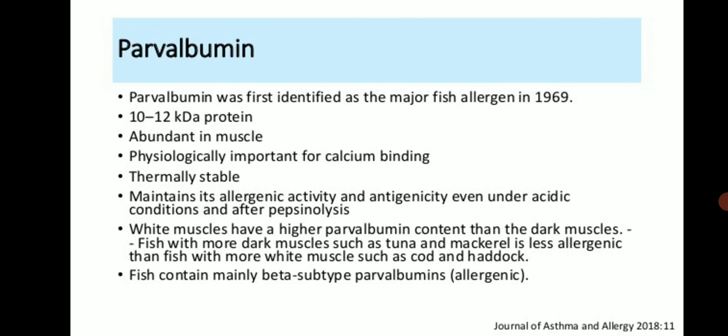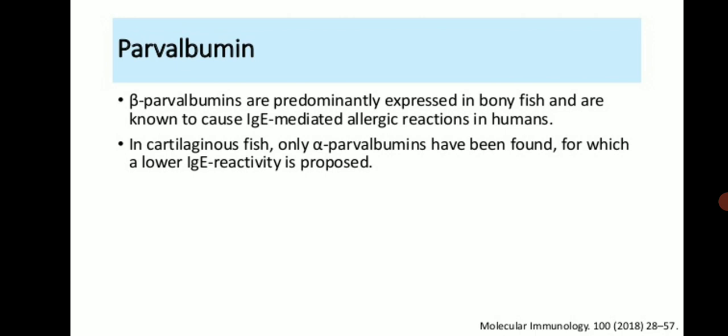Beta-parvalbumin is predominantly expressed in bony fish and is a known cause of IgE-mediated allergic reactions in humans. In cartilaginous fish, only alpha-parvalbumin has been found, for which a lower IgE reactivity is proposed.